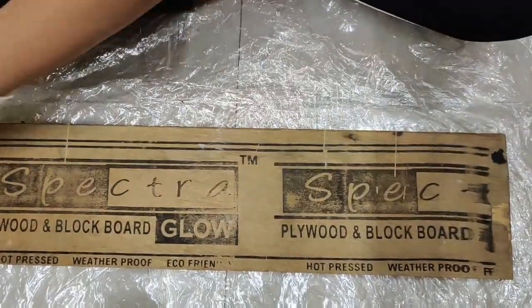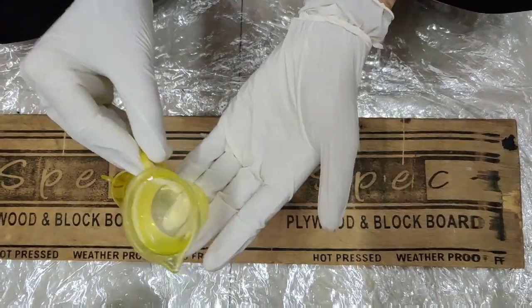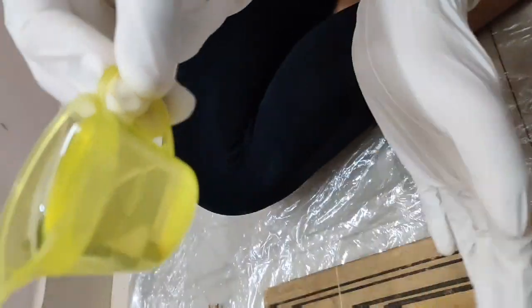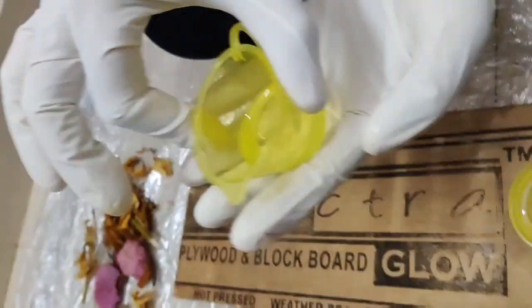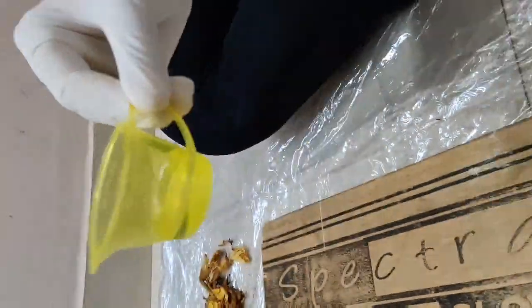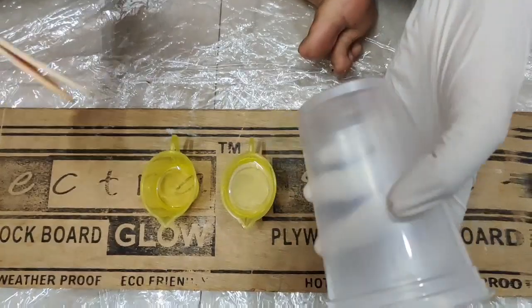I have already put them in container. So this is part A, resin 30 ml if you can see it. And this is part B, the hardener 10 ml. Now I will mix them. I am using this cup to mix them both.